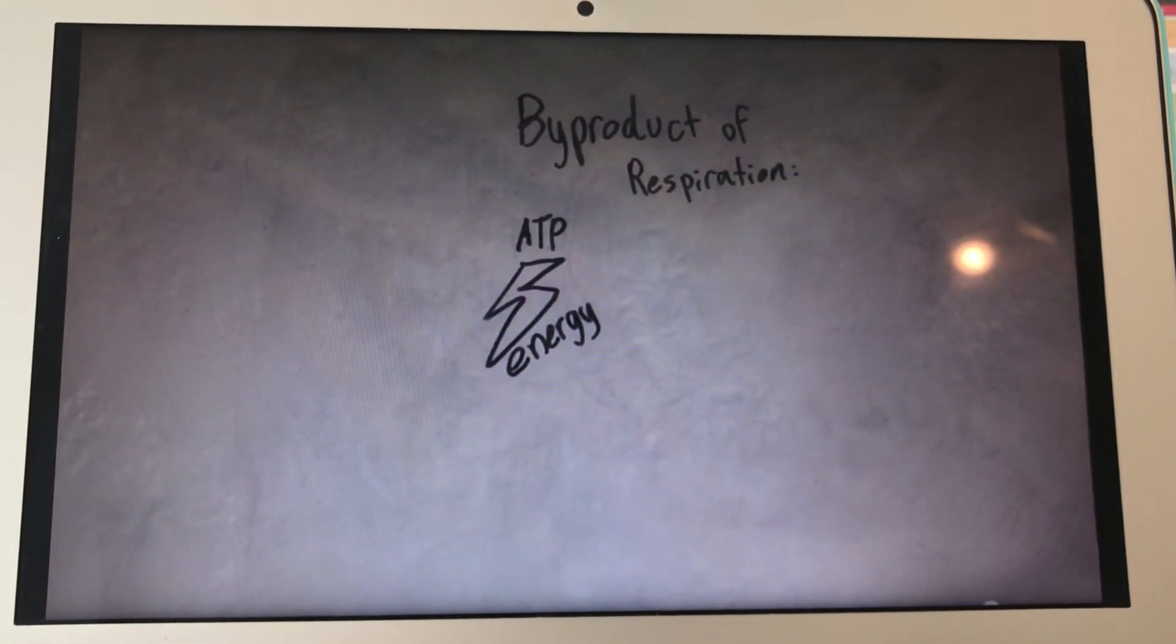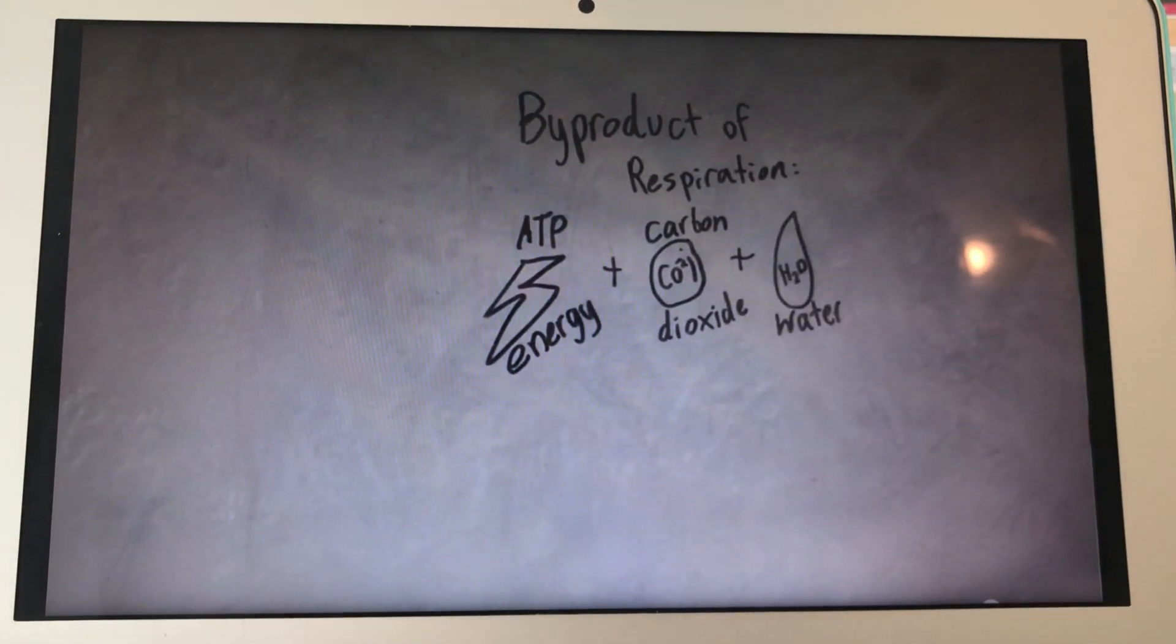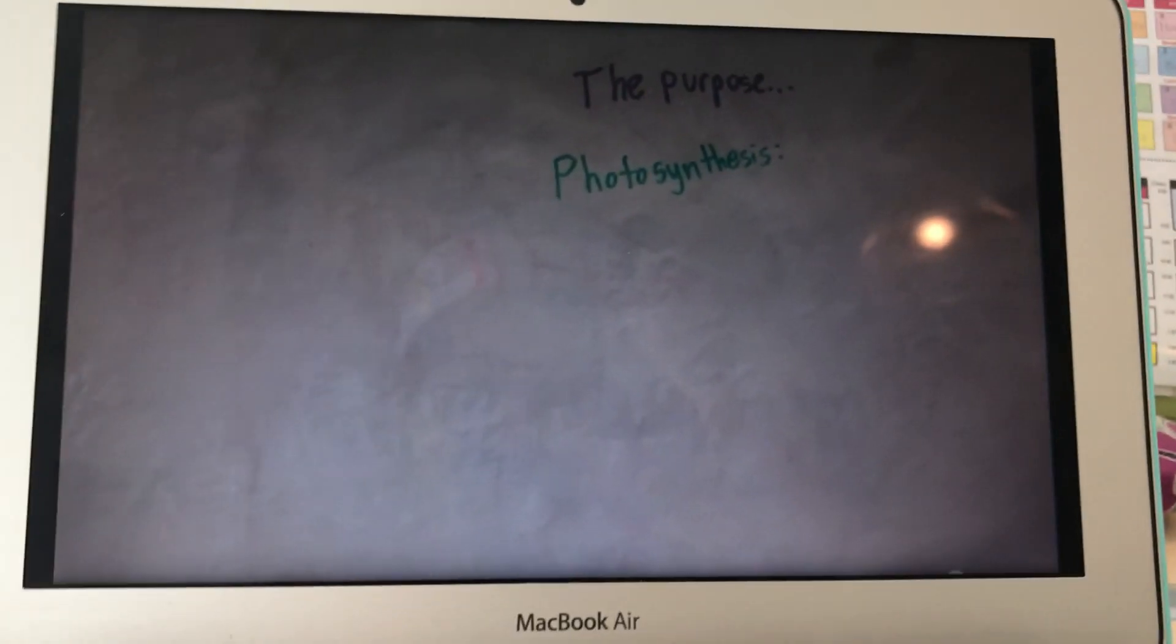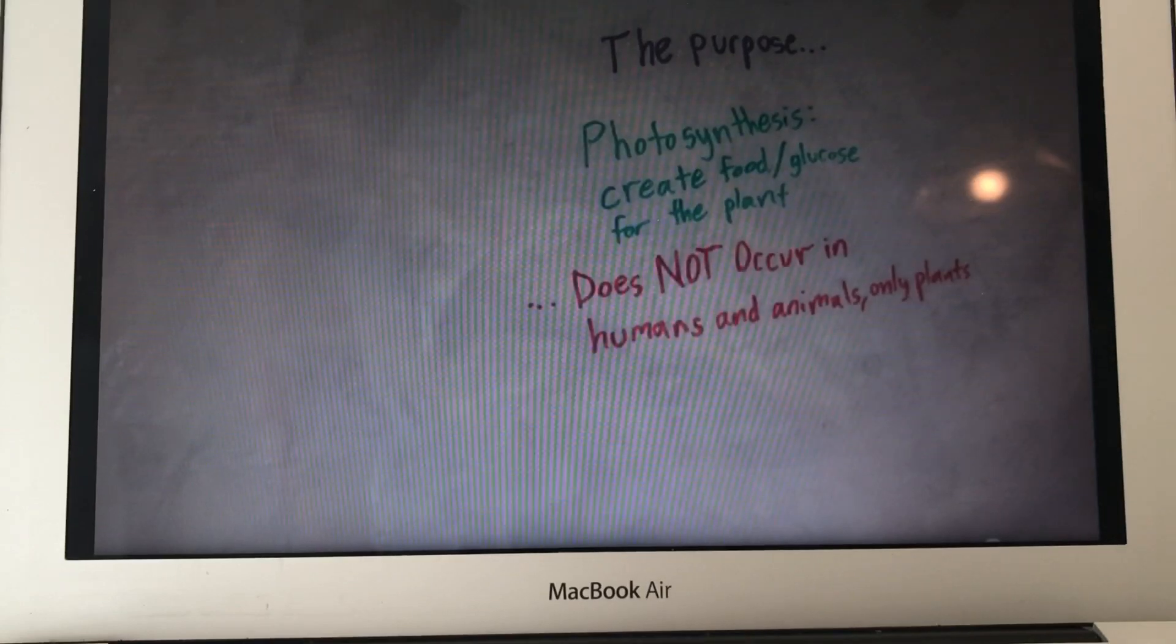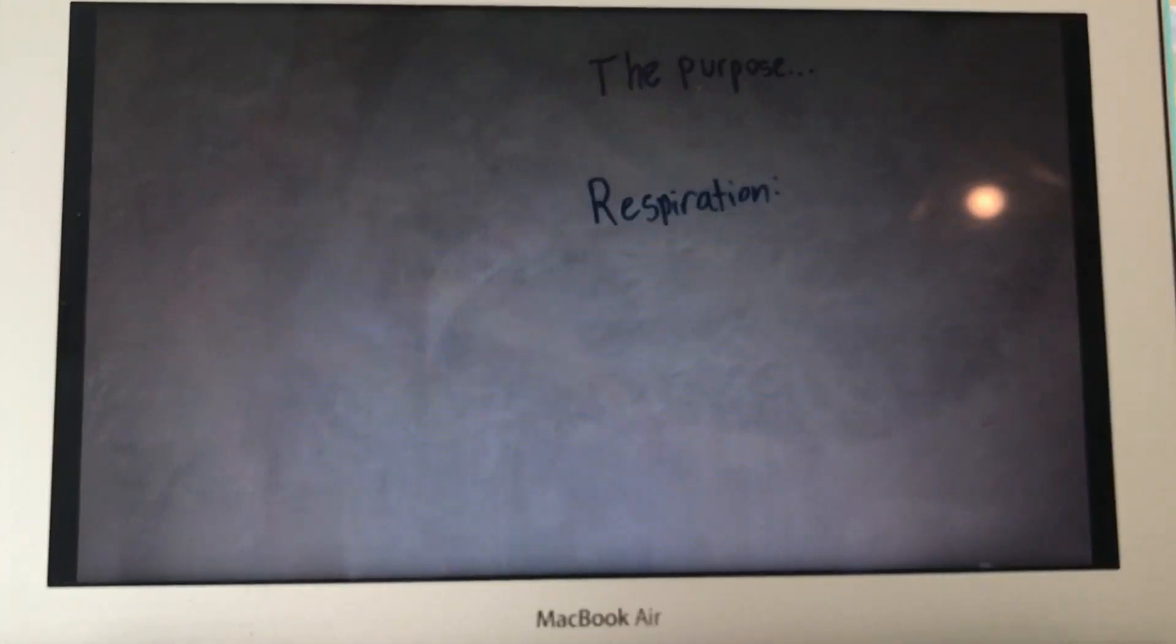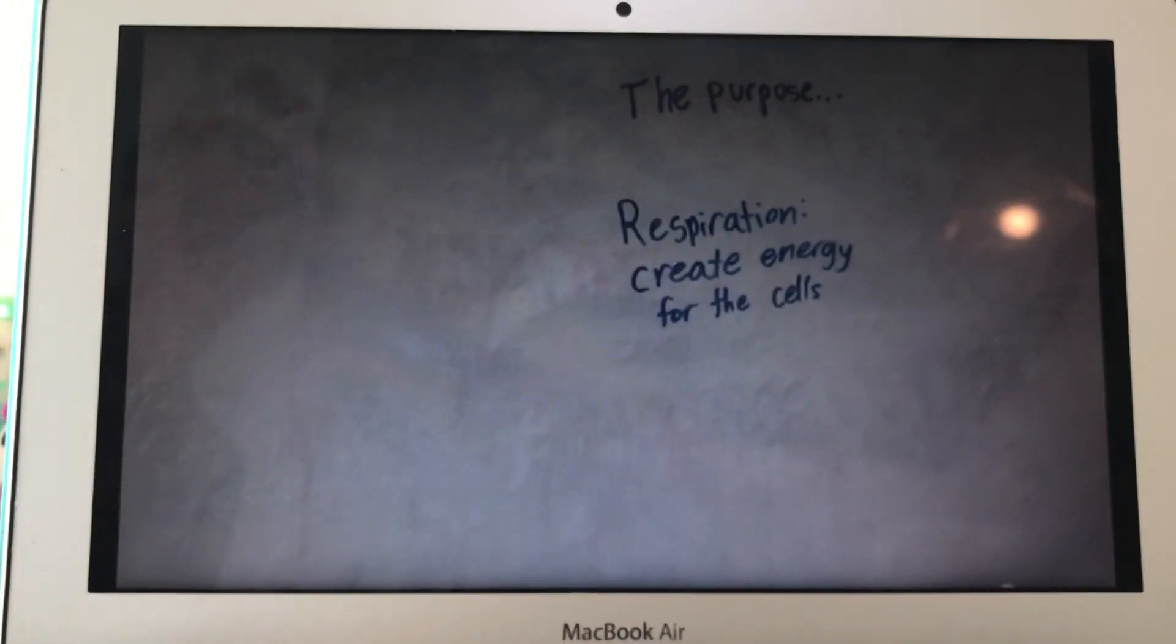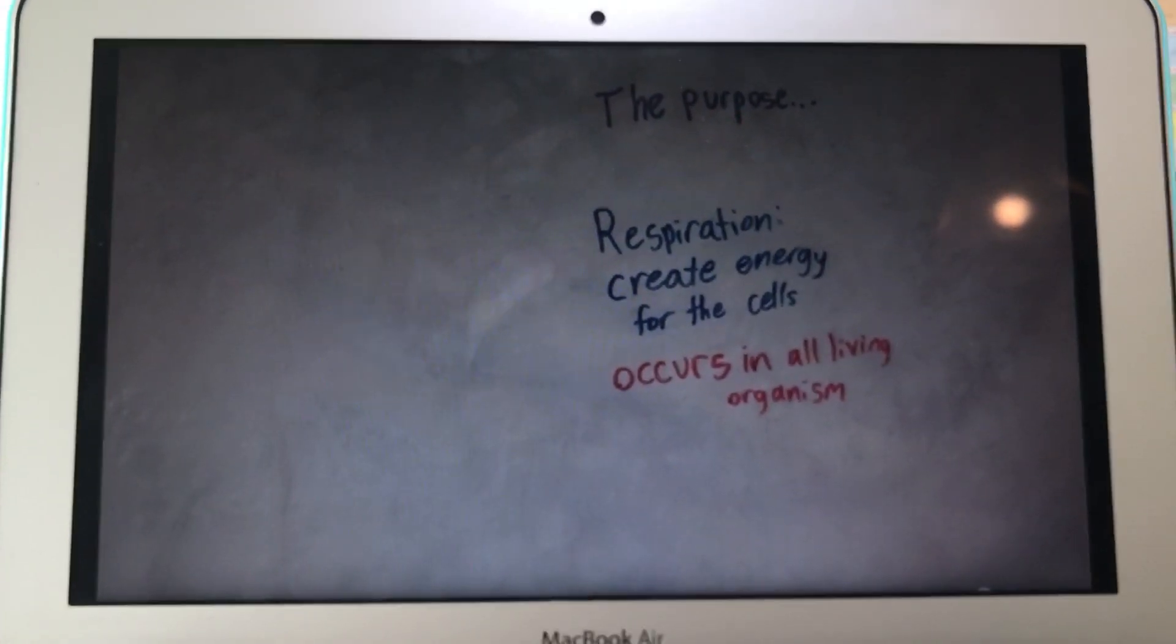The byproducts of respiration are ATP, energy, plus carbon dioxide, and water, H2O. The purpose of photosynthesis is to create food or glucose for the plant. This process does not occur in humans and animals, but only plants. The purpose of respiration is to create energy for the cells. This process occurs in all living organisms.